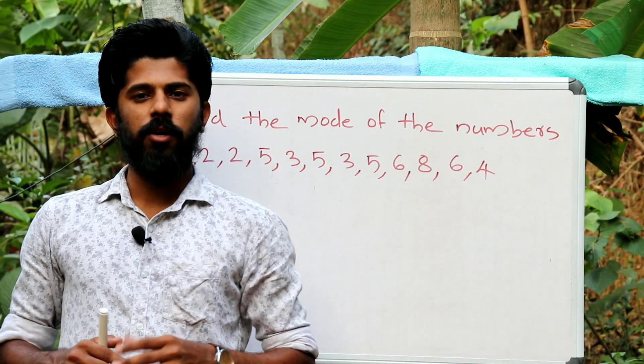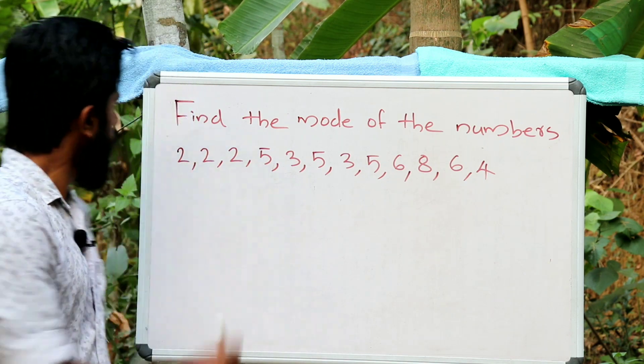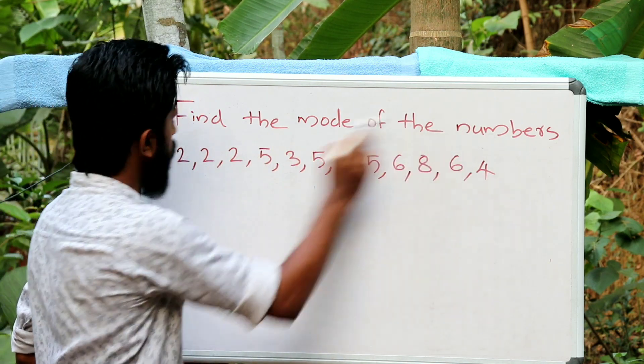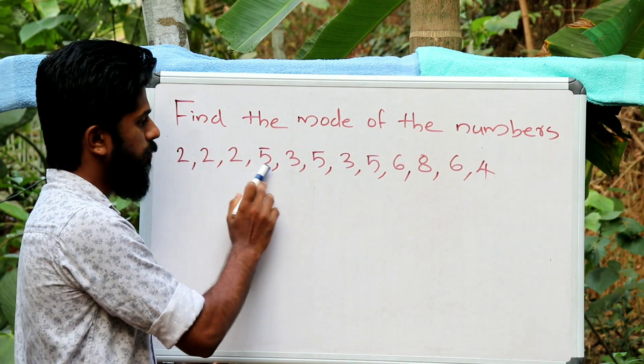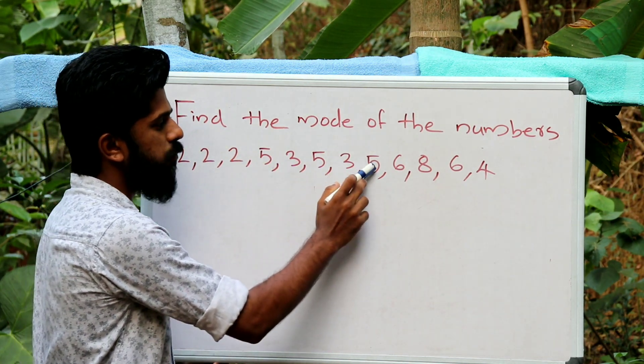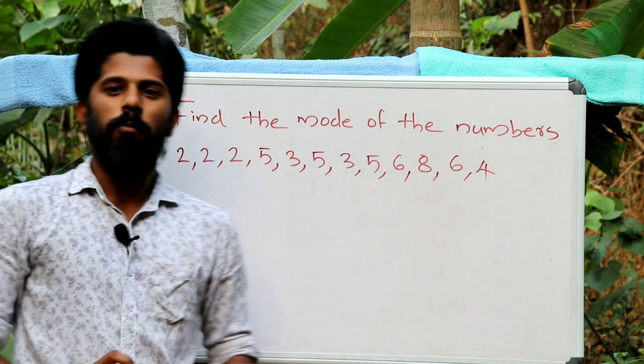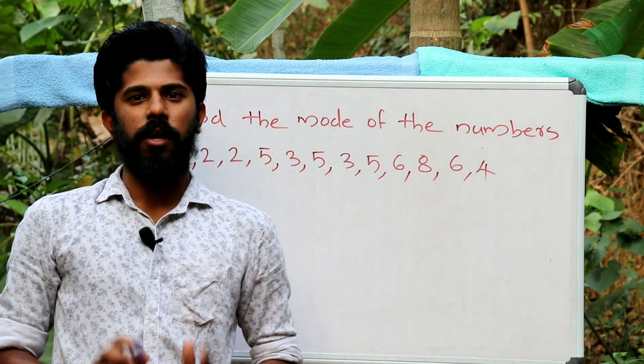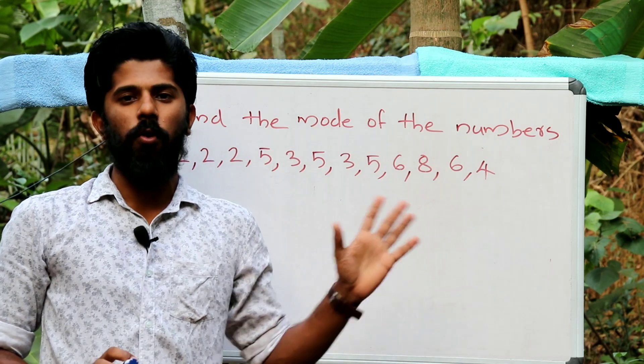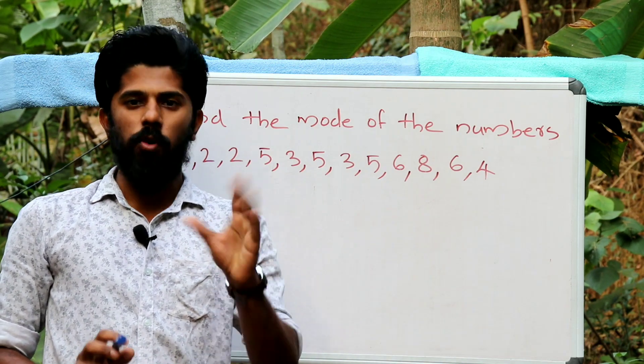Okay, let's try one more example. Find the mode of the numbers: 2, 2, 2, 5, 3, 5, 3, 5, 6, 8, 6, 4. If you have numbers, what is the number? What is the mode of the number?